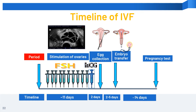After the eggs are collected, they will be fertilized with the sperm to form embryos. Two to five days later, the embryo is transferred back into the womb. Generally, we advise transferring one embryo each time. Pregnancy test is performed 14 days after embryo transfer.